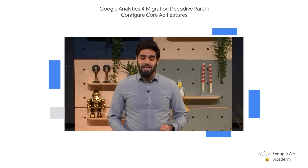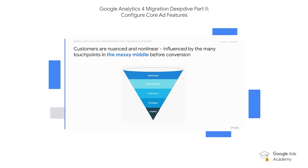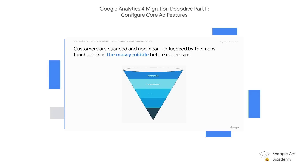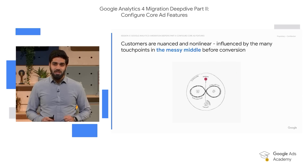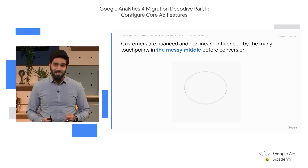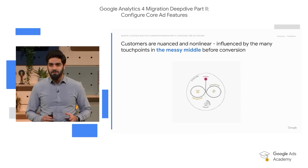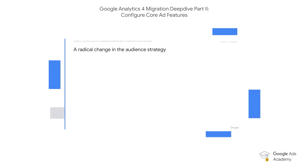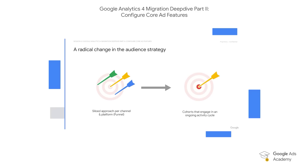Our research at Google shows consumer journeys are becoming increasingly complex and engaging the target customer is becoming trickier than ever. As digital touch points, channels and choices continue to expand, consumer journeys have become ever messier, resembling a chaotic scavenger hunt. Nowadays, users can hop between different stages of the funnel in a non-linear fashion. This calls for a radical change in the audience strategy — a change from a siloed approach per channel and platform to cohorts that engage in an ongoing activity cycle.